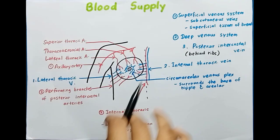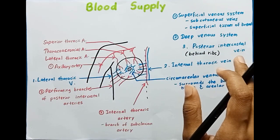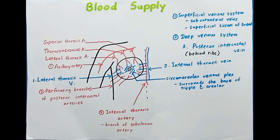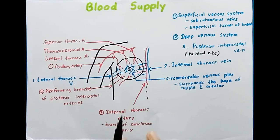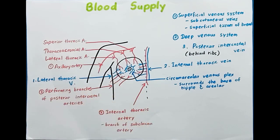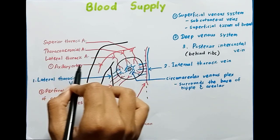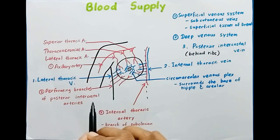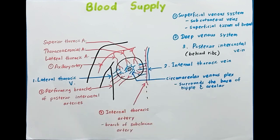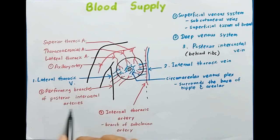To give a brief summary: in red I have explained the arterial supply and in blue the venous drainage. For arterial supply, the major arteries include branches from the axillary artery — the superior thoracic artery, thoracoacromial artery, and lateral thoracic artery — as well as the internal thoracic artery, which is a branch of the subclavian artery, and the perforating branches of the posterior intercostal arteries.